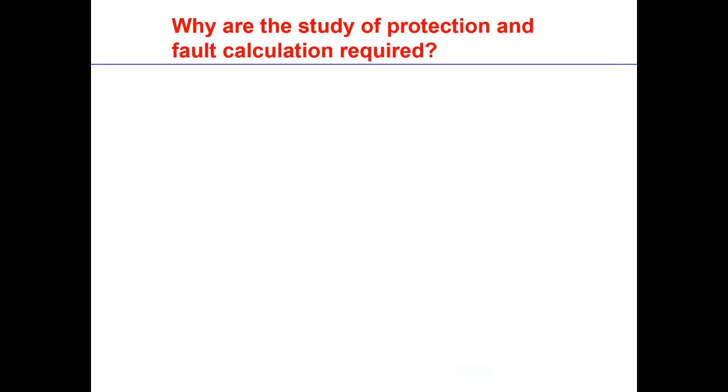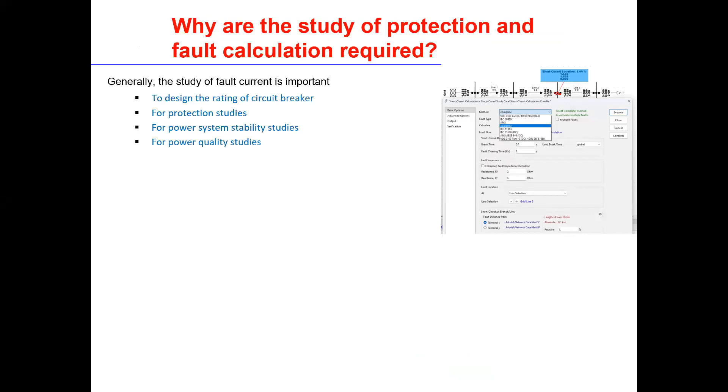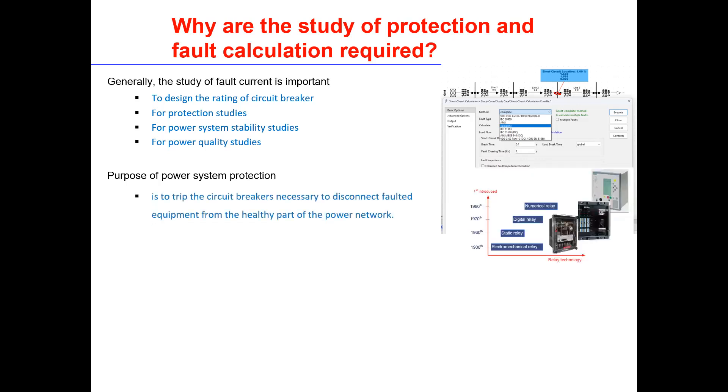The first thing we need to look at is why are the study of protection and fault calculation required. Generally, the study of fault current is important because it is helpful to design the rating of circuit breaker, for protection grading studies or coordination, for power system stability, and of course for power quality studies. The purpose of power system protection overall is to trip the circuit breaker necessary to disconnect faulted equipment from the healthy part of the power network. This is to avoid further damage to the equipment, a blackout, or cascading damage, as it is very expensive to repair the damage or the cost of damaged equipment.